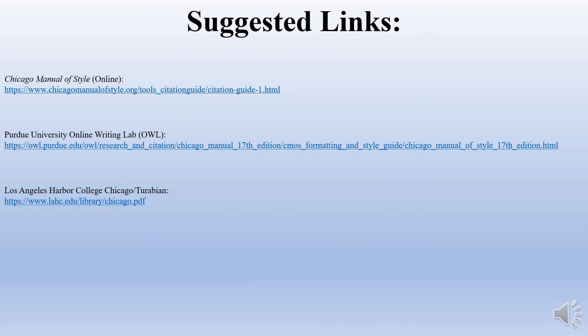The following links are great tools to use when working on your research paper. The first I would suggest is the official Chicago Manual of Style online — there is a link on the slide and it will also be provided in the notes below. The second is Purdue University's Online Writing Lab, or Purdue OWL. This is a great tool not just for citation but for formatting issues and writing critiques — I highly recommend it to all my students. The third is a PDF from Los Angeles Harbor College on Chicago-Turabian, which is a great printout you can put in your notebook when working on Chicago or Turabian style.